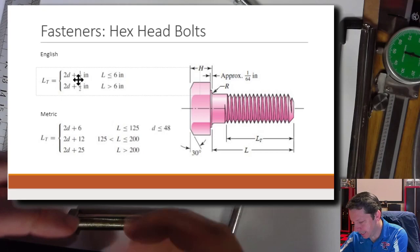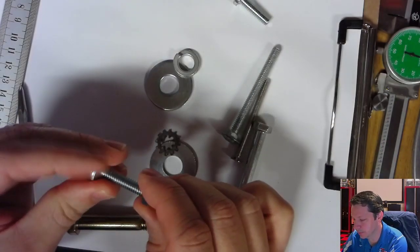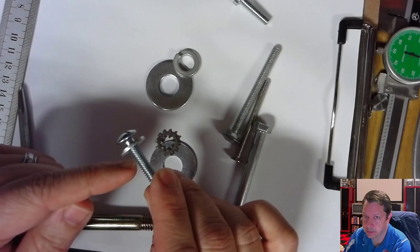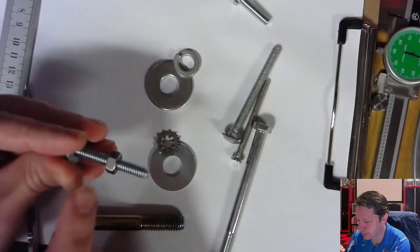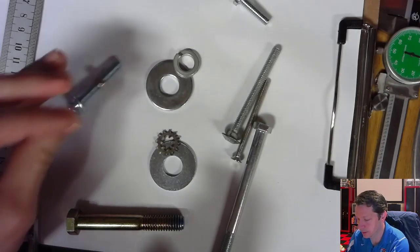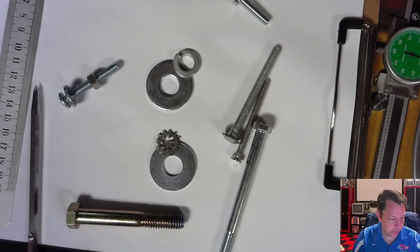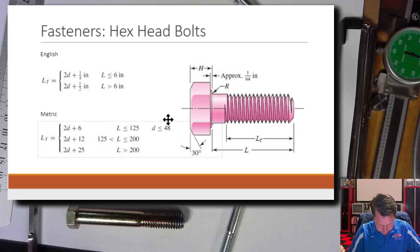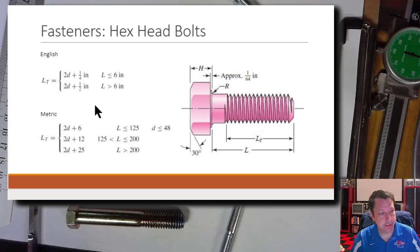The bolt behaves differently in threaded vs. unthreaded sections. When you tighten the nut, you're not just compressing the material — you're also stretching the portion of the bolt in the grip. You need to know whether you're stretching a threaded or unthreaded portion, which is why you need this ratio. These equations are on page 414 in Shigley 10th edition, at the beginning of section 8.3.